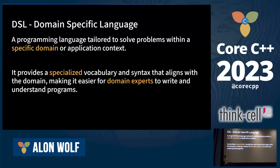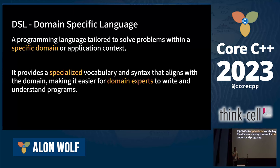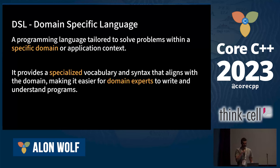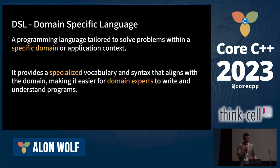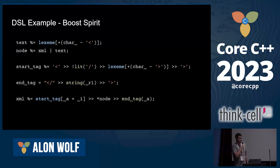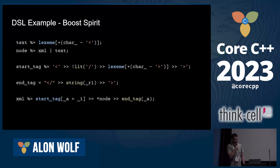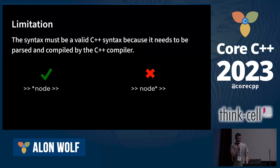Domain specific language, or DSL, is a language designed to help domain experts solve problems in their specific domain. It does this by fitting the vocabulary and syntax to that domain. The trade-off of using a DSL is that first you need to understand the domain and then learn the DSL syntax. But once you do, it can be a powerful tool. Here we have an example from the Boost Spirit library, a library for writing runtime parsers. As you can see, we can make C++ look almost like a completely different language.